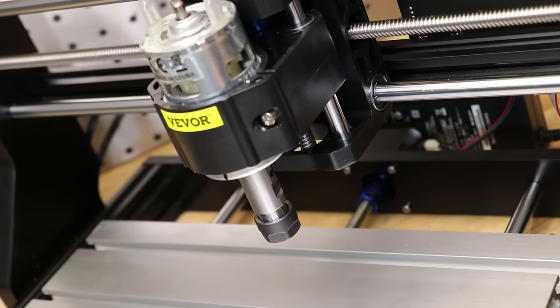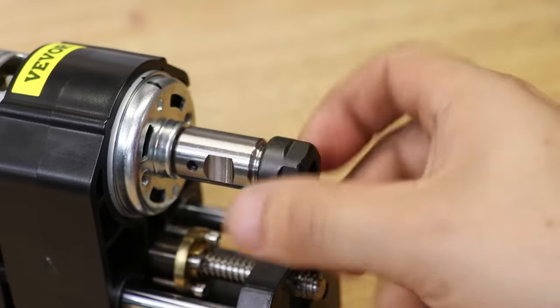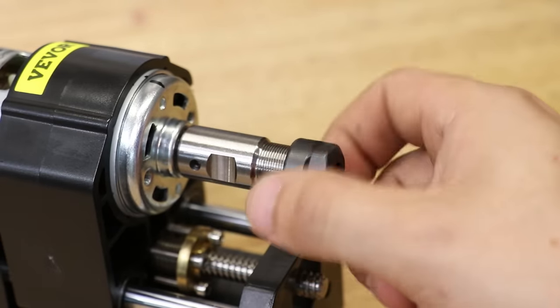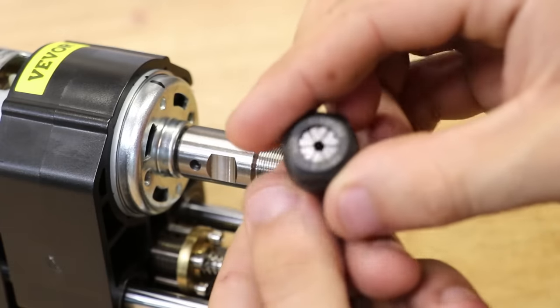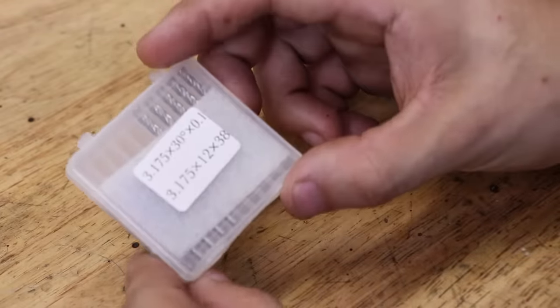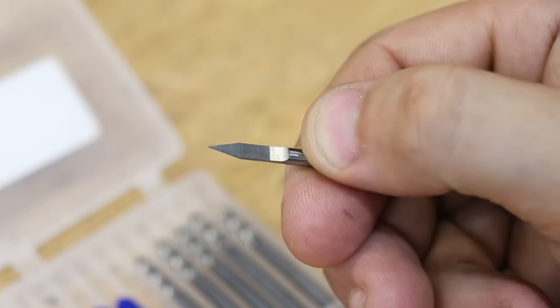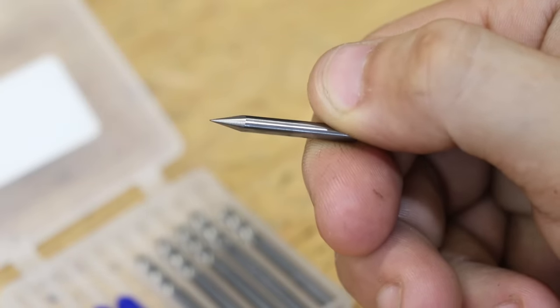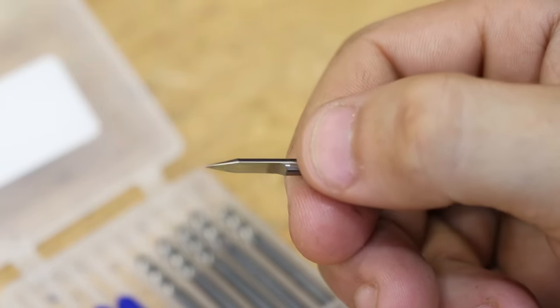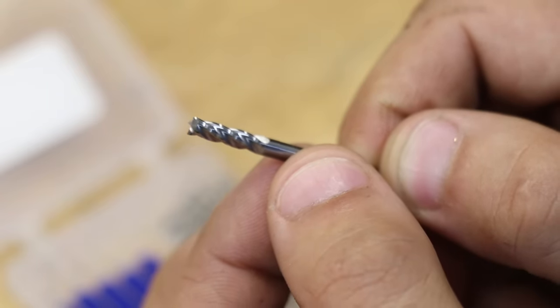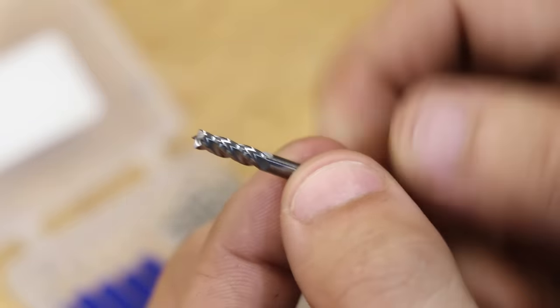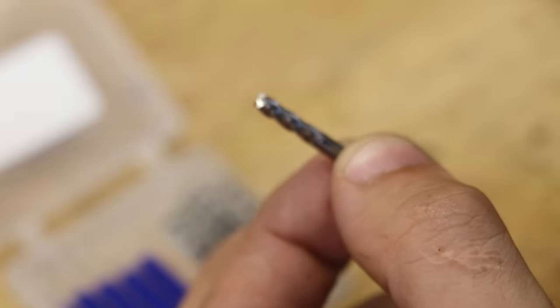The spindle on this machine uses ER11 collets. This one came with a 1/8 inch collet and a bunch of 1/8 inch cutters. They gave us five through-degree engraver bits - I'm not a huge fan of these V-bit engravers. They also gave us some four flute end mills. For the sake of chip evacuation, I think one or two flute cutters might be better suited than four flutes.